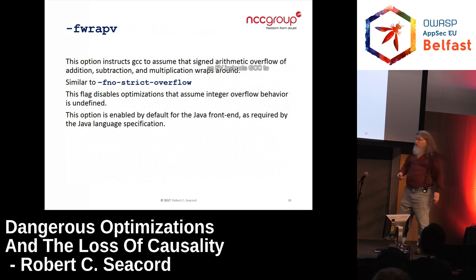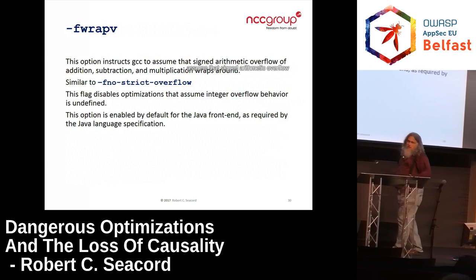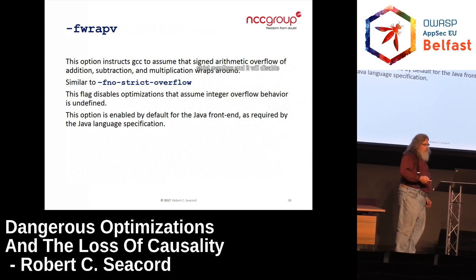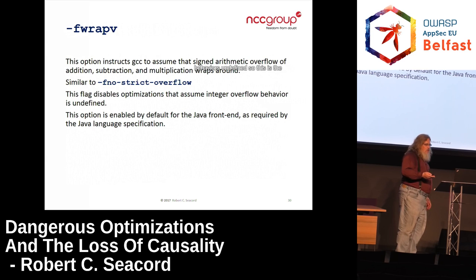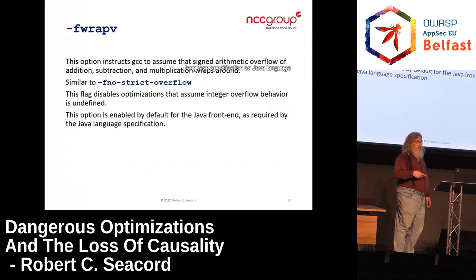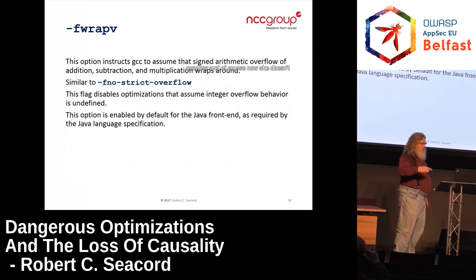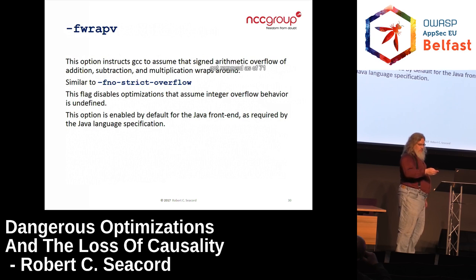Fwrapv instructs GCC to assume that signed arithmetic overflow of addition, subtraction, and multiplication will wrap around, similar to no-strict-overflow, and it disables optimizations that assume integer overflow behavior is undefined. This is the option that was enabled for the Java front end, as required by the Java language specification. Java only has signed integers, and those have well-defined wraparound behavior. In C, unsigned integers have well-defined wraparound behavior, but signed integers have undefined behavior on overflow. GCC no longer has a Java front end as of 7.1.